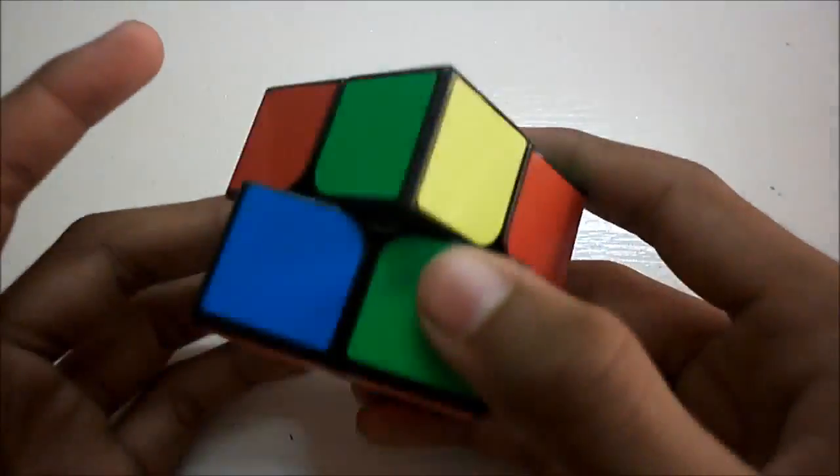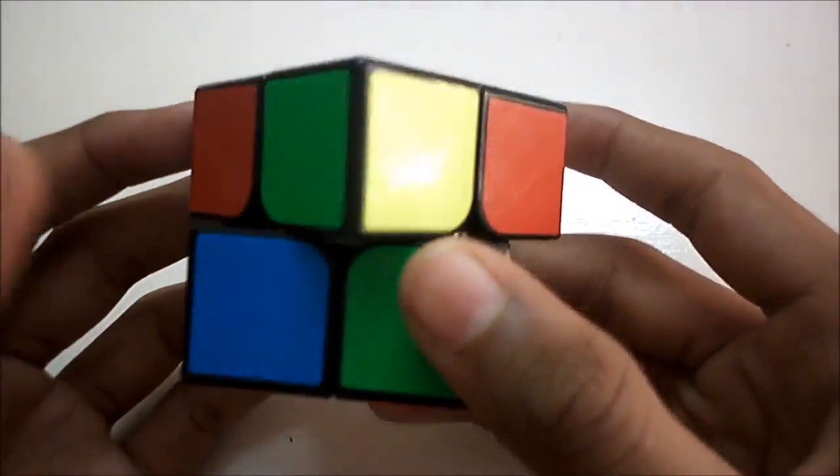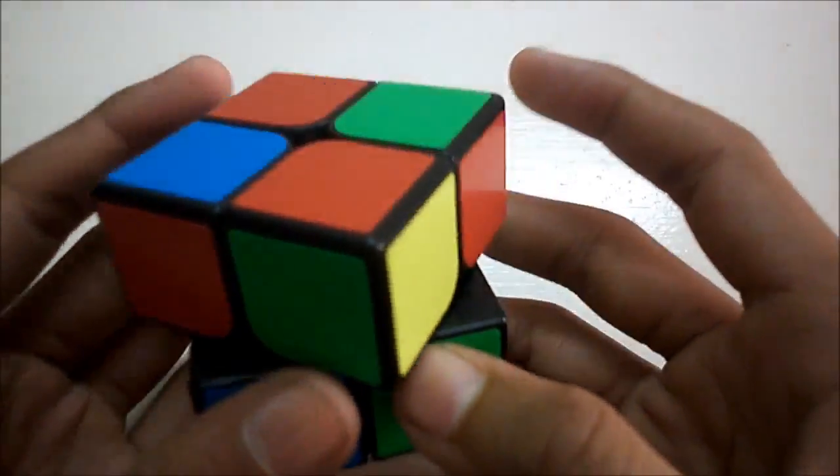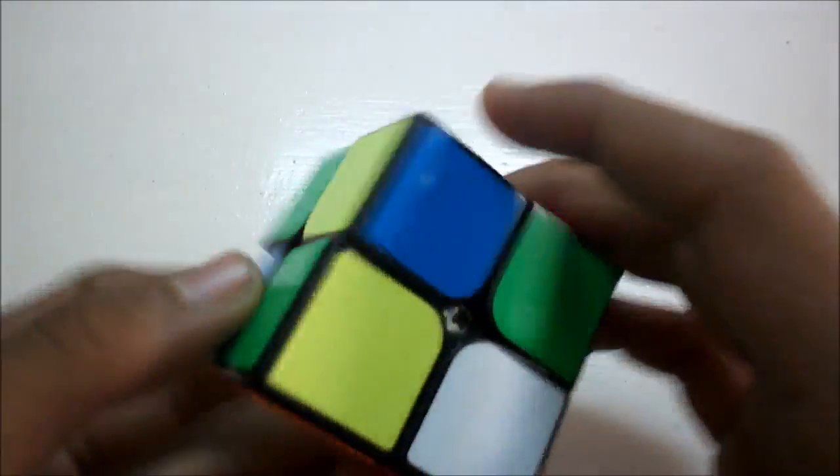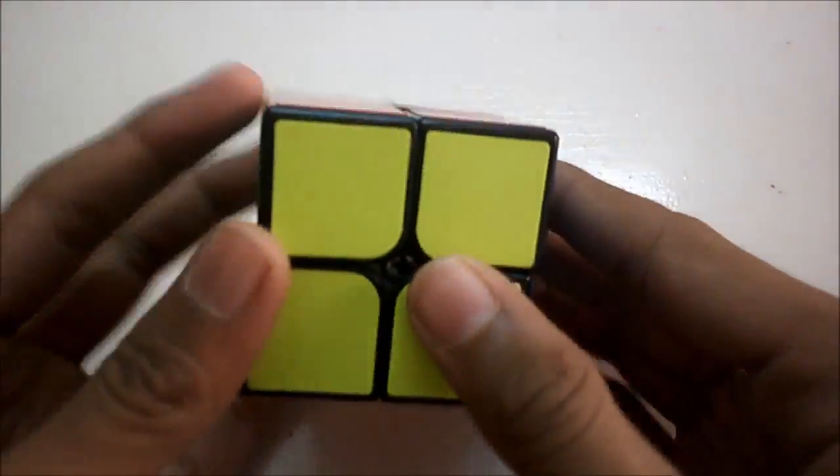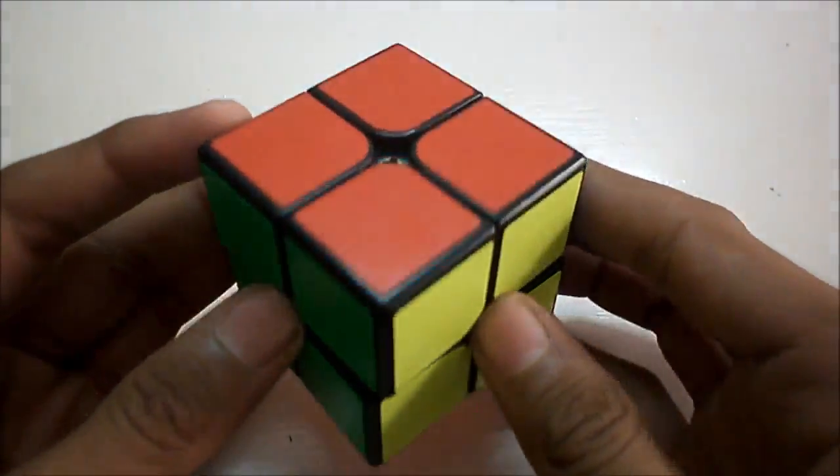First step is making a face, not particularly a layer but a face or a side. The next step is OLL which means orienting the last layer, and the last step is PBL which means permuting both layers. So let's jump right into it.